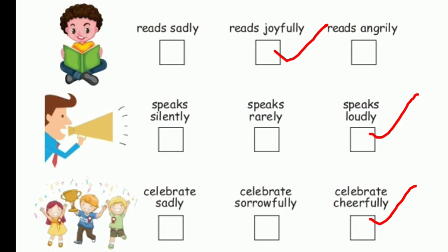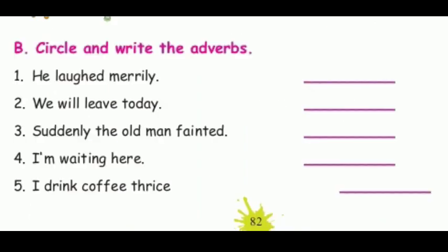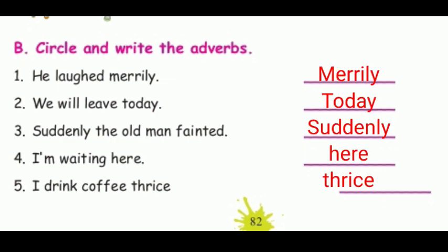Circle and write the adverbs. First: 'He laughed merrily' — the adverb is merrily. Second: 'He will leave today' — the adverb is today. Third: 'Suddenly the old man fainted' — the adverb is suddenly. Fourth: 'I am waiting here' — the adverb is here.